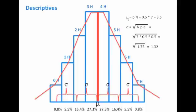You'll recall that in that lecture, the mean of the distribution is equal to p, the probability of success, times the number of trials — or 0.5 times seven. Therefore, the mean of this distribution is 3.5. The standard deviation is the square root of n times p times q, which is the probability of failure. Plugging in seven, p of 0.5, q of 0.5, that turns out to be the square root of 1.75, or 1.32. So the mean is 3.5 and the standard deviation is 1.32.